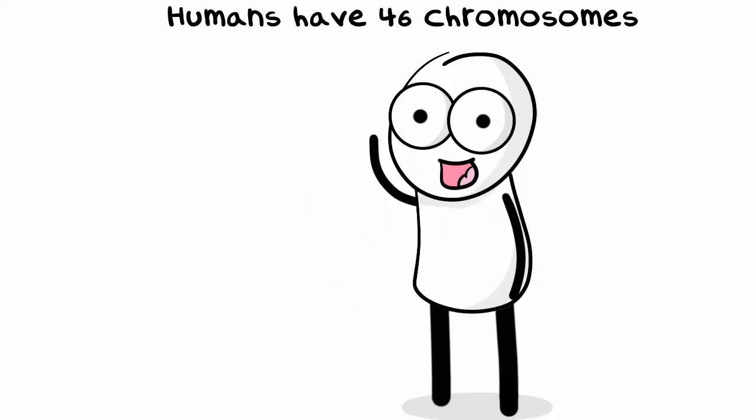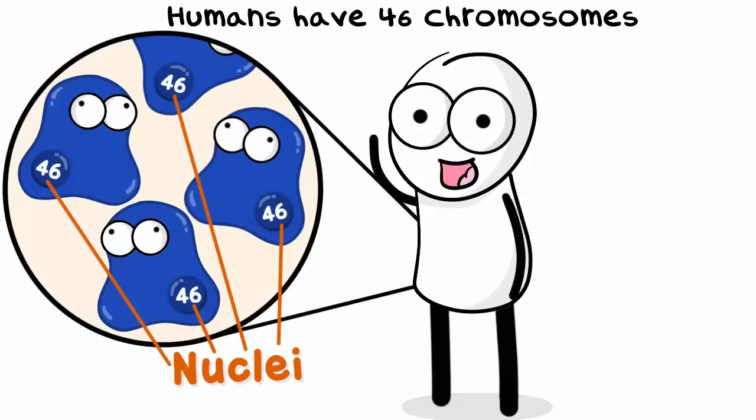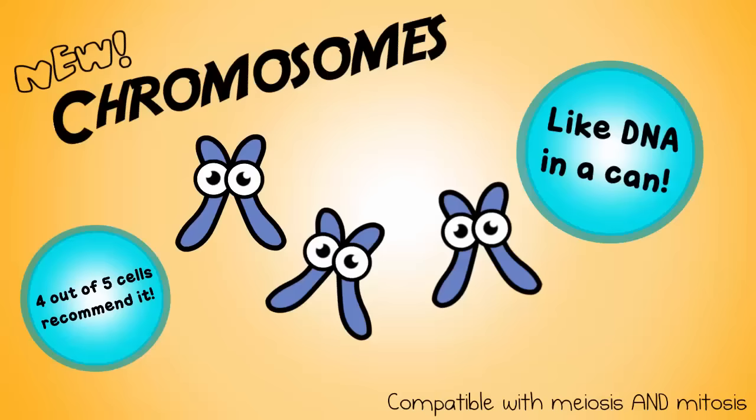You've probably heard before that humans have 46 chromosomes. That means 46 chromosomes are found in most human body cell nuclei. What are nuclei? Well, it's the plural of nucleus. You don't say nucleuses, you say nuclei. In the nuclei, there are 46 chromosomes. Organizing DNA into condensed chromosomes makes it a lot easier to move over when you're making new cells.